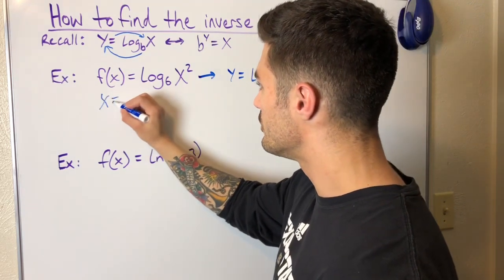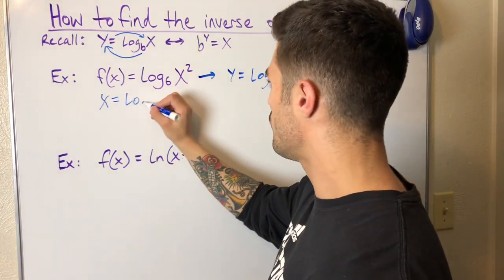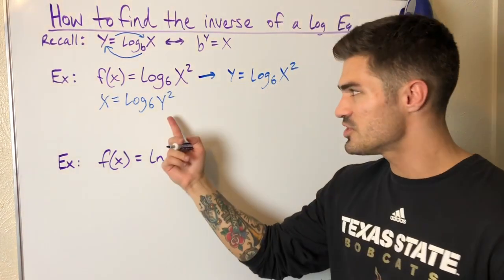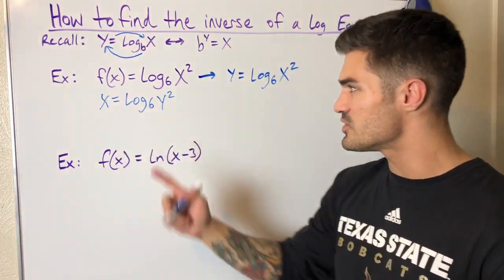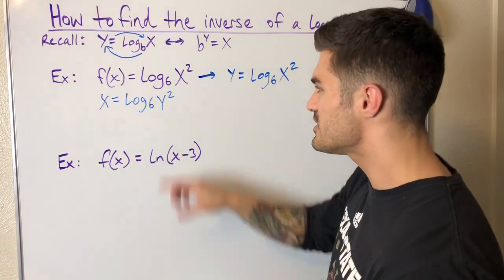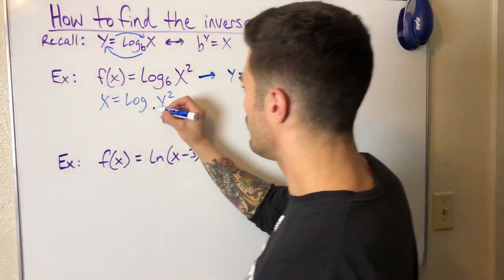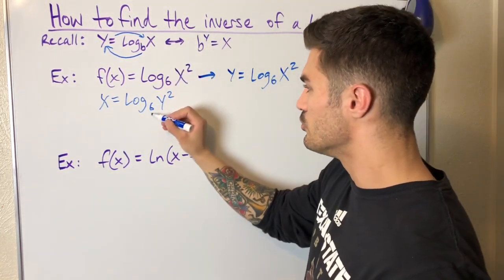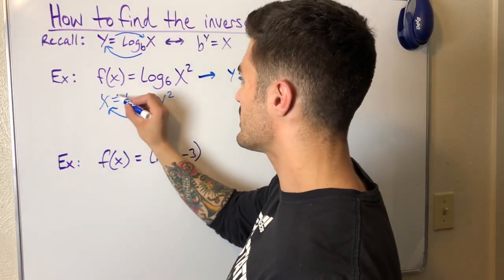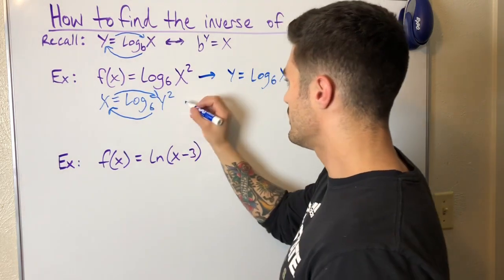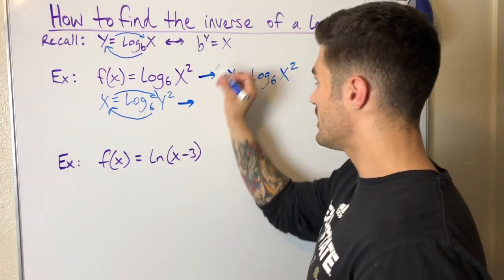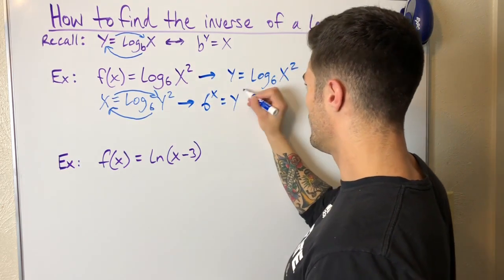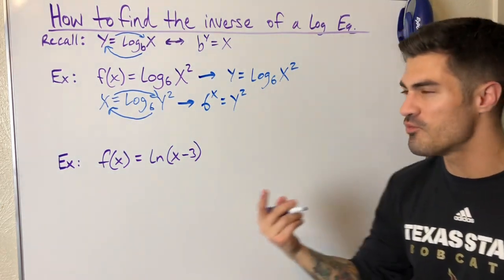My next step: I have x equals log base 6 of y squared. Now that I've switched the position of x and y, I am going to solve for y. This is log base 6 of y squared. Now I can use my little rule, and the way I remember it is 6 to the x equals y squared.